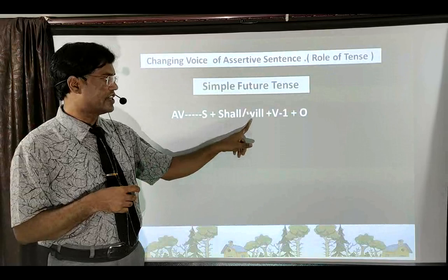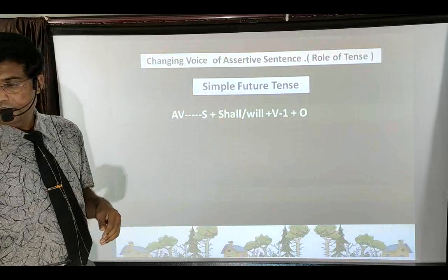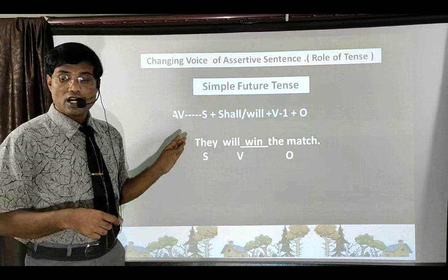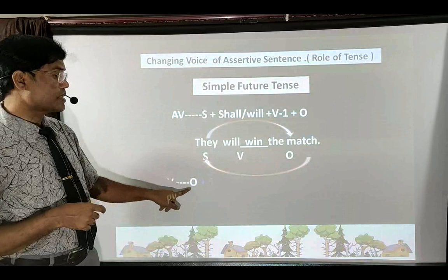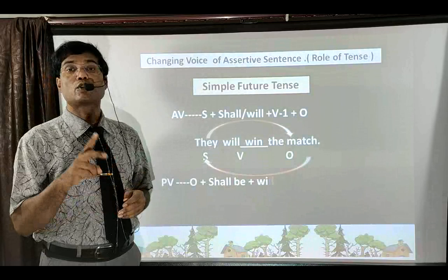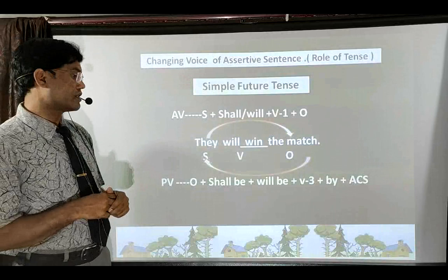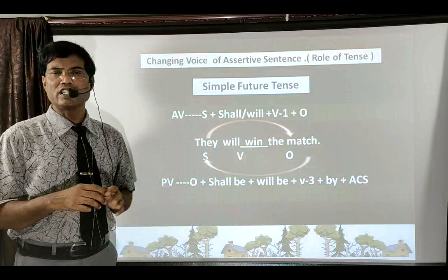Simple Future Tense: active voice formula is Subject + shall/will + first form of verb + Object. 'Shall' is used before 'I' and 'we', 'will' for everyone else. Example: 'They will win the match.' Identify subject, verb group, and object. Passive voice formula for Simple Future: object first, then shall be/will be (appropriate to-be form), then third form of verb, then 'by' with the accusative case of subject.